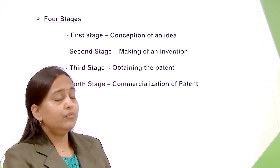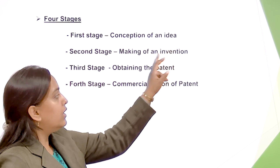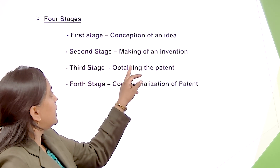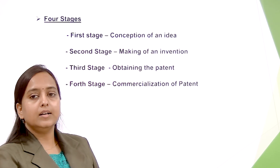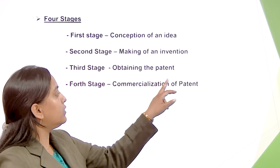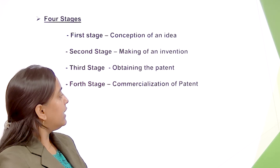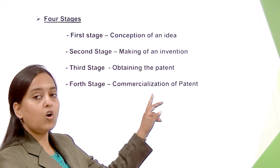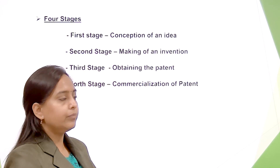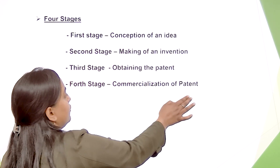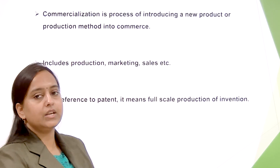then first he will have an idea in his mind, then at the second stage he will make the invention, then at the third stage he will obtain the patent, and at the fourth stage he will commercially exploit the invention. Here I am talking about the fourth stage, which, like the first stage, is also very important.